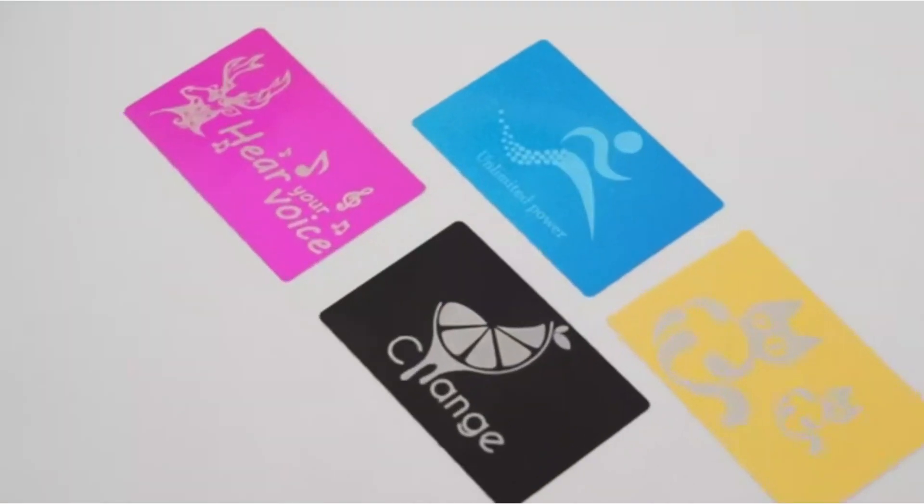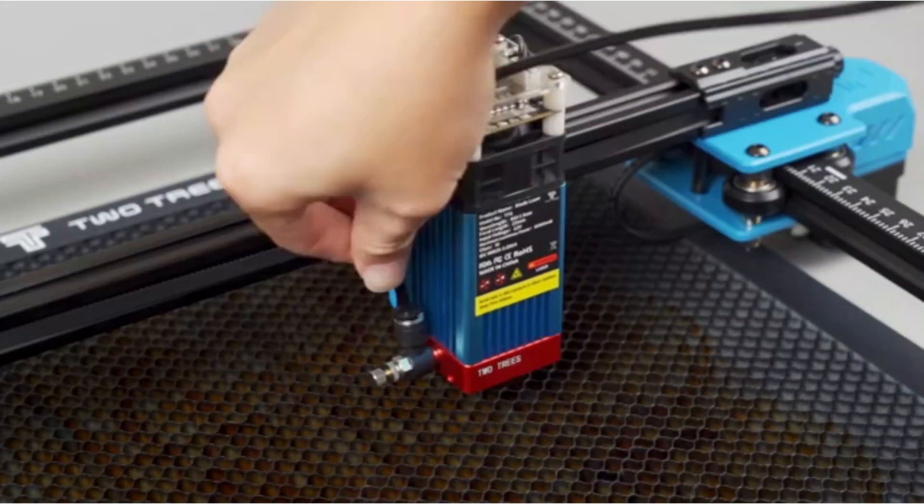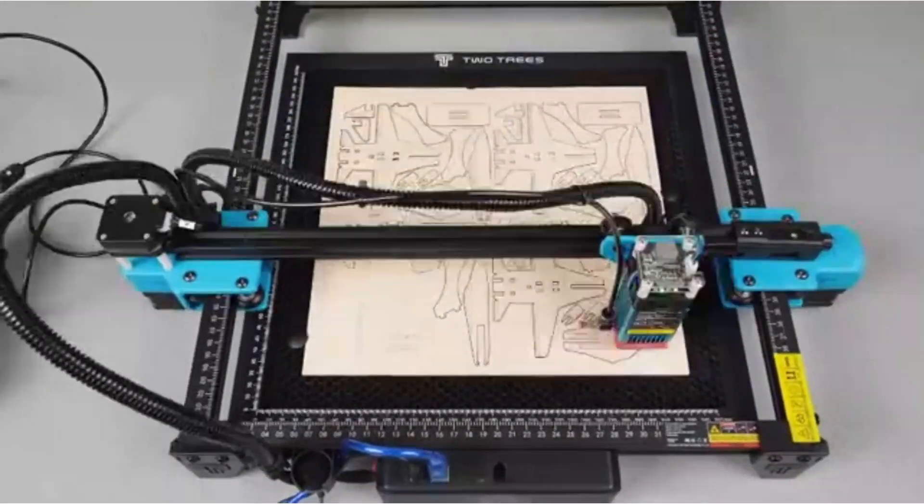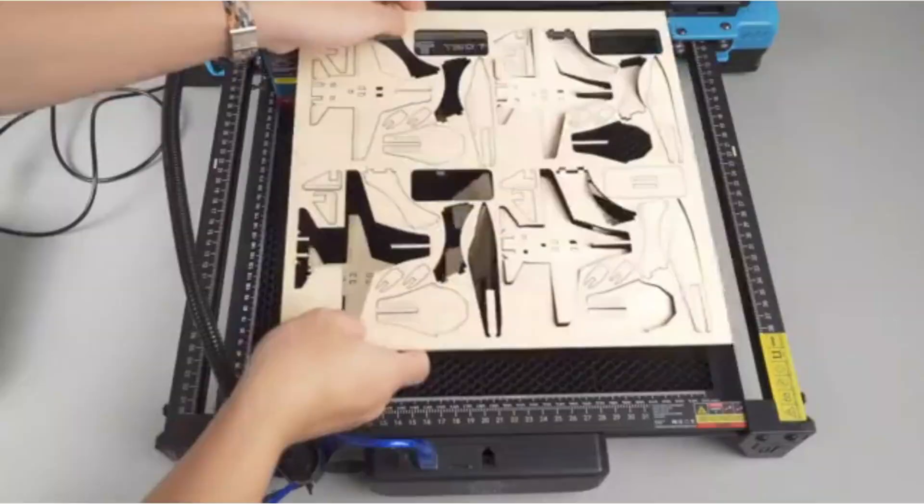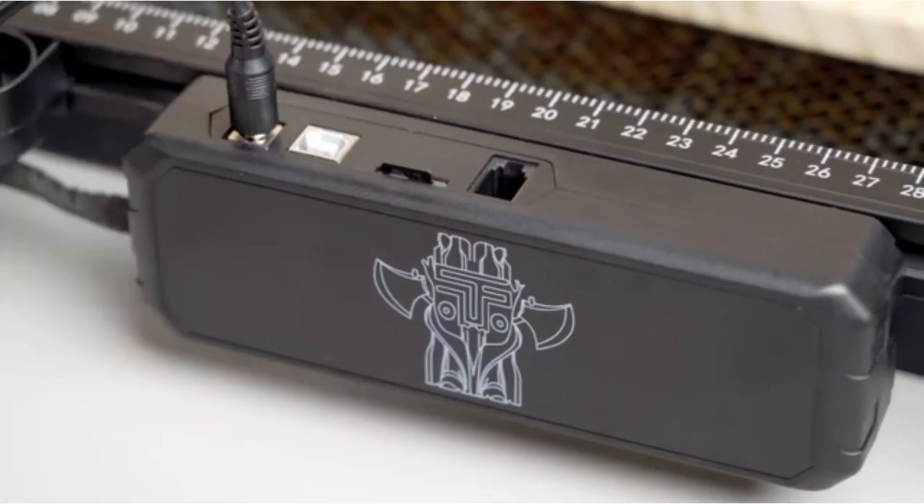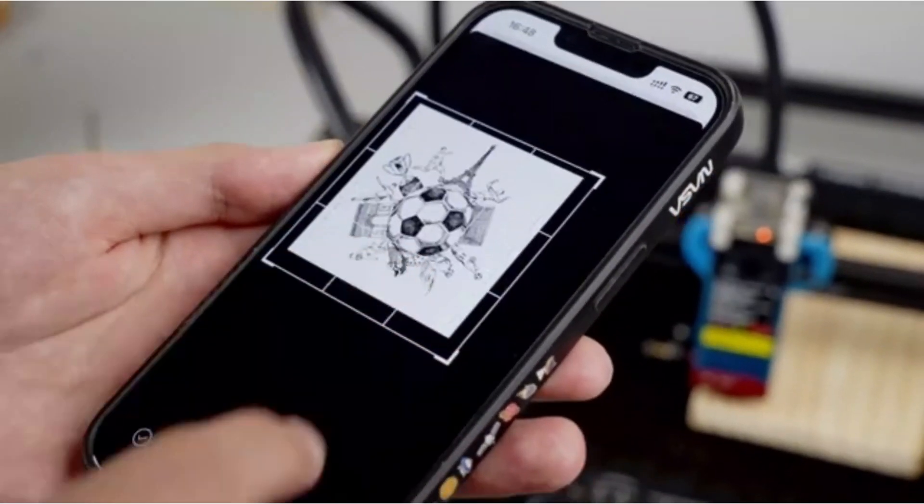Equipped with a 450 plus or minus 5nm blue light laser, it offers powerful cutting and engraving capabilities on various materials. The device also has versatile functionality, including CNC router capabilities, allowing you to create intricate designs or tackle large-scale projects.